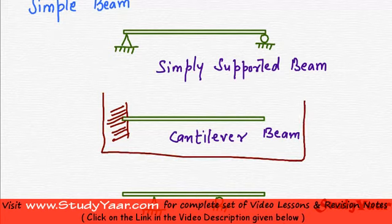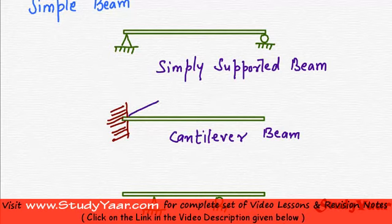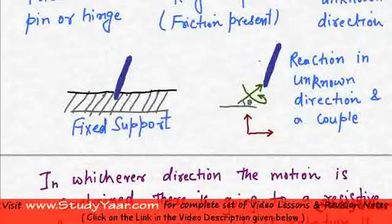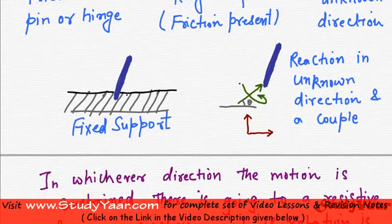Now, this is a cantilever beam. Here, the support is a fixed support. We have seen that a fixed support gives a reaction in an unknown direction and has a moment as well. When we talked about different kind of supports, whenever we have a fixed support, the fixed support gives a reaction in an unknown direction and also a moment.